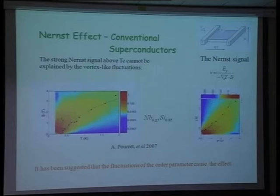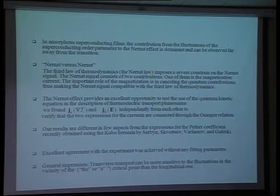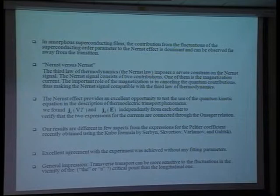We see that the existence of the Nernst effect outside of the superconducting domain is undisputable, and it cannot be attributed to any speculation about vortices outside — it is just an ordinary amorphous metal and nothing else. It was suggested by the authors that superconducting fluctuations can be responsible for this effect. We showed that in amorphous superconducting films, the contribution from fluctuations extends very far, and can explain all that.